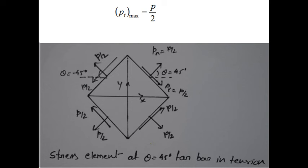The resultant stress PR equals the square root of Pn squared plus Pt squared. In a uniaxial stress system where the bar is subjected only to simple tension or compression, the two most important orientations of the stress elements are theta equal to 0 and theta equal to 45. The former orientation has maximum normal stress Pn, and the latter has maximum shear stress Pt max, as shown in the figure.